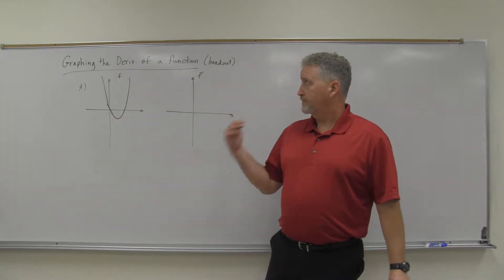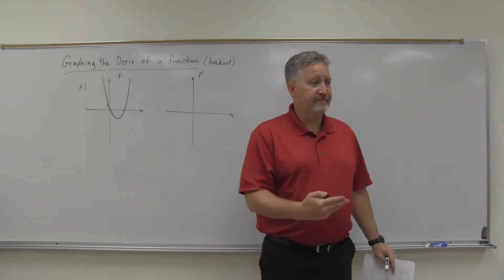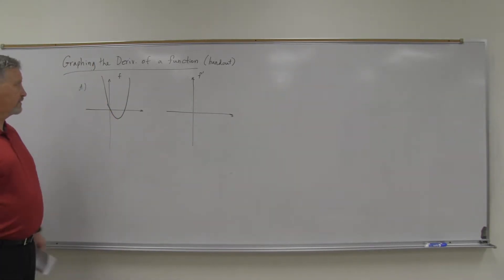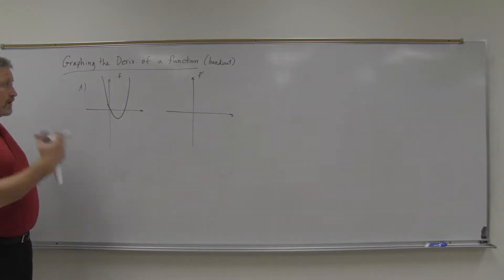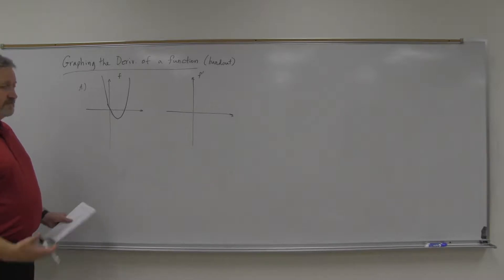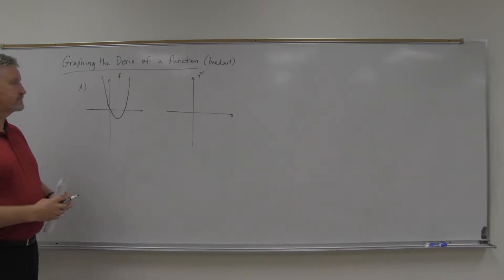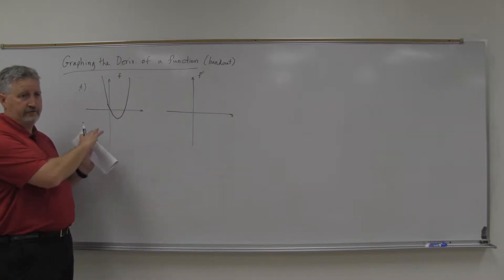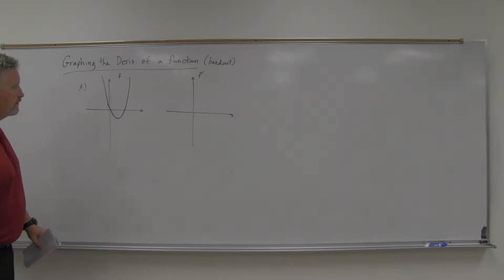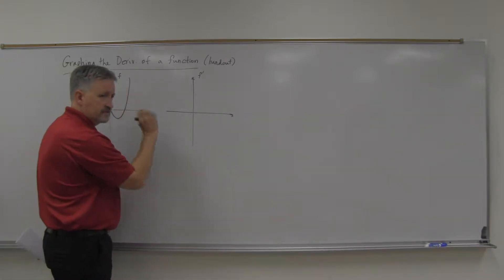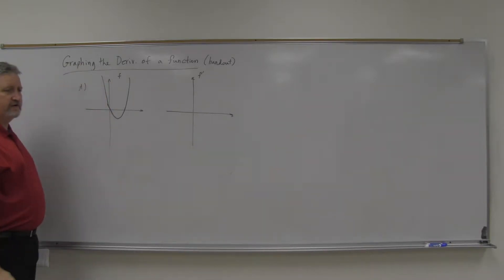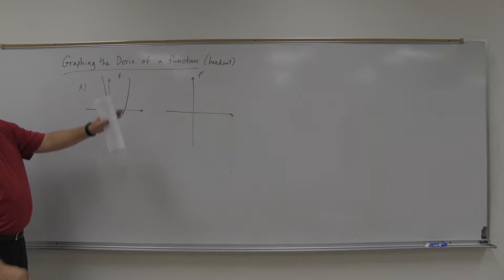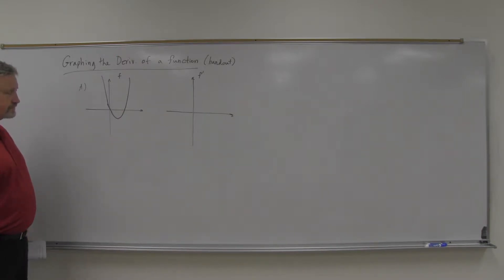We've talked about what the derivative of f means graphically speaking. Now what we want to do is take it one step further and think about what the graph of a derivative would look like. If I graph all the different values of the derivative out, what is it going to look like compared to the original function? The goal is to take this function f and sketch a separate graph of its derivative.